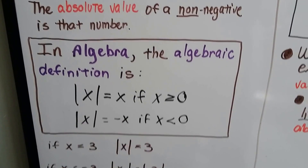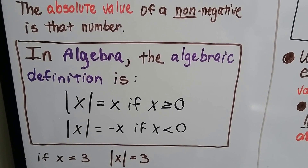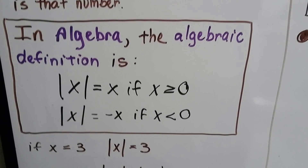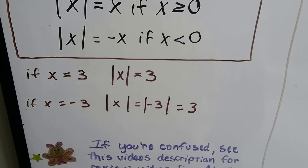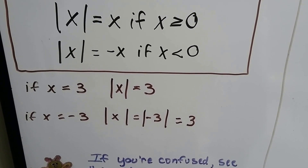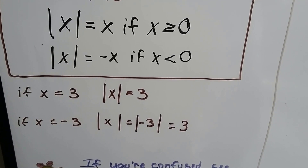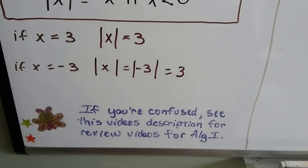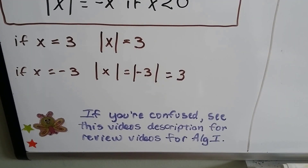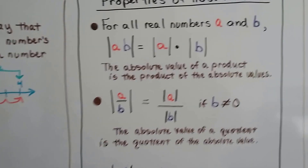In algebra, the algebraic definition is: the absolute value of x equals x if x is greater than or equal to 0, and the absolute value of x equals negative x if x is less than 0. So if x equals 3, then the absolute value of x is 3. And if x equals negative 3, then the absolute value of x is 3. If you're really confused, see this video's description for review videos for Algebra 1 — I'll have a link to my inequalities and absolute value playlist, and that might help. Or you can keep watching because maybe it'll make sense as we go along.